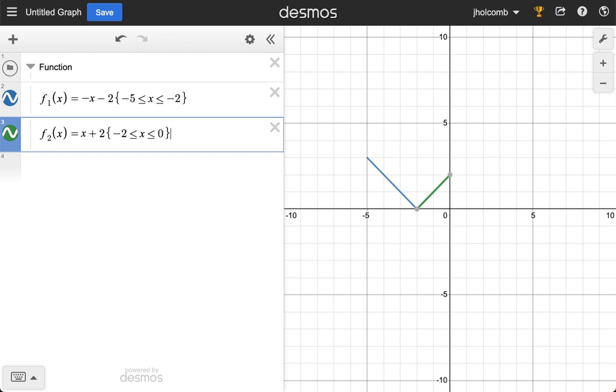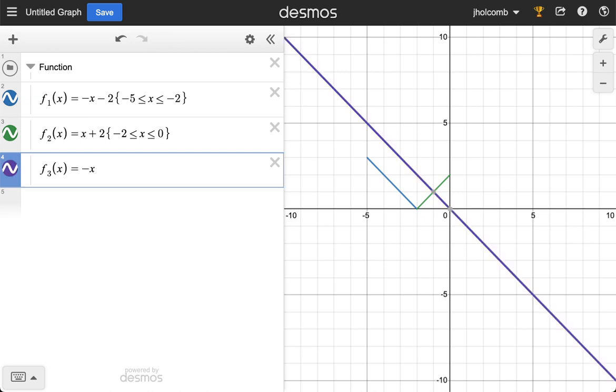My next function f₃, and you'll see why we're naming these things with subscripts here in a bit, equals the opposite of x. Now I want the y-intercept to be 2, and I want to restrict that function. I want to have it go from 0 ≤ x ≤ 4. So there is our piecewise function - it has three pieces and they're all lines.